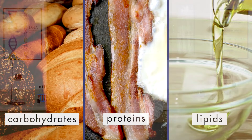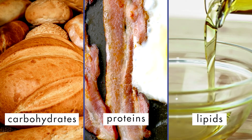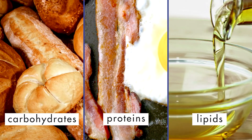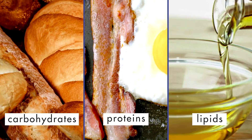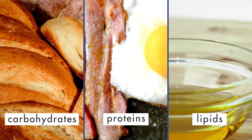The food we eat contains three types of nutrients: carbohydrates, proteins, and lipids. All three types of nutrients are vital to our growth and development, and it is important that we have a balance of nutrients in our diet.